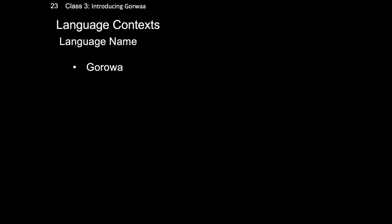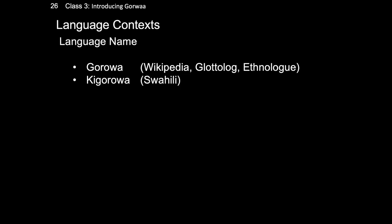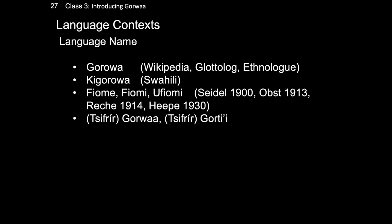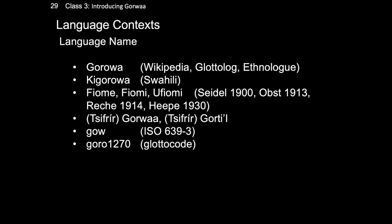Gorwa is often called Goroa, and in fact all of the highest profile sources for language data use this form. The form Ki-Goroa is also seen, which is simply the Swahili form of this word. Early works by outsiders use the terms Fiome, Fiomi, and Ufiomi to refer to the Gorwa people and language, where Fiomi refers to one name of the mountain at the geographical heart of the Gorwa-speaking area. Gorwa people themselves refer to the language as Tsifrir-Gorwa, or less commonly Tsifrir-Gortii, and so Gorwa is the term I will use. There are other ways to refer to the language, specifically by its ISO 639-3 code GOW, or its glottocode Goro1270.